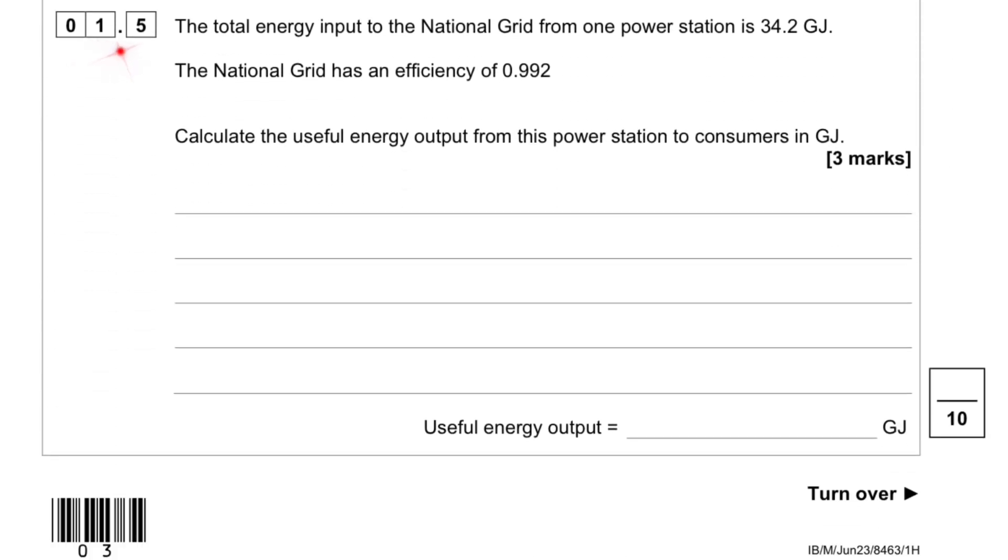Question 1.5. The total energy input to the national grid from one power station is 34.2 gigajoules. The national grid has an efficiency of 0.992. Calculate the useful energy output from this power station to consumers in gigajoules.